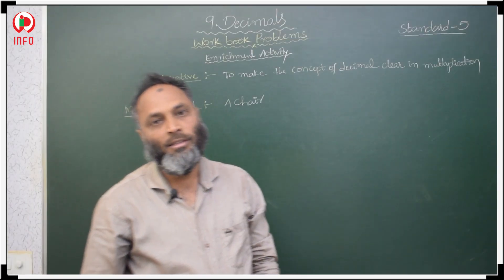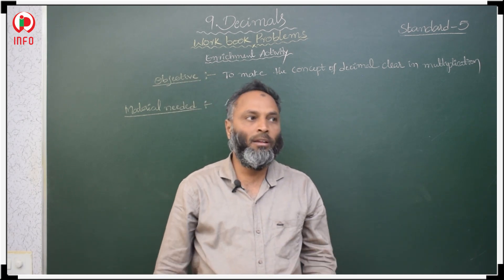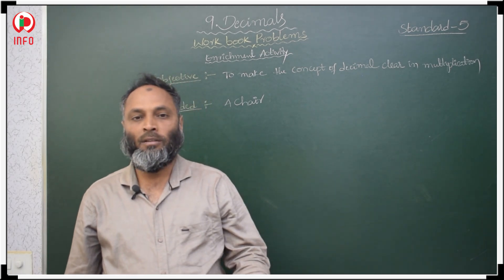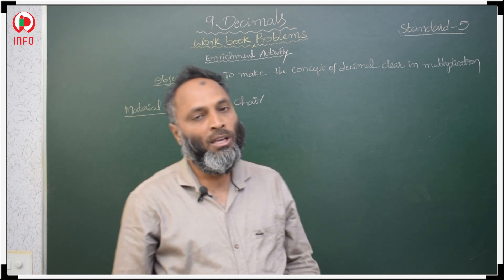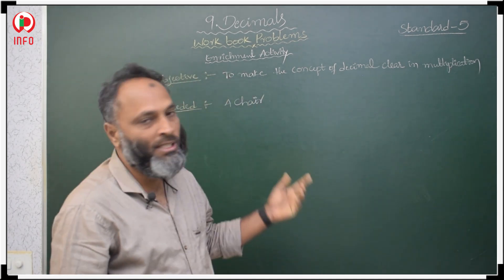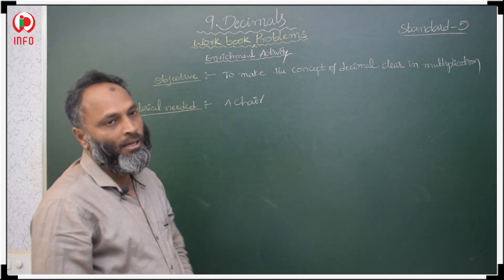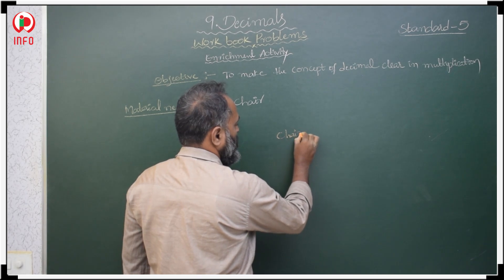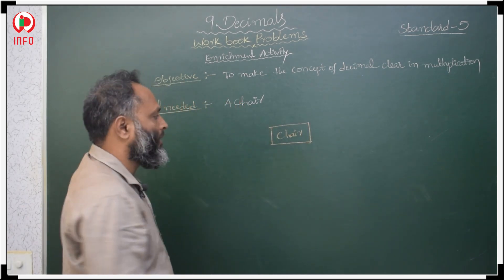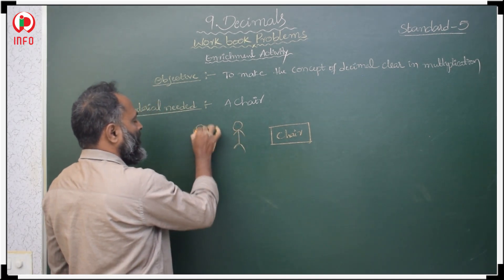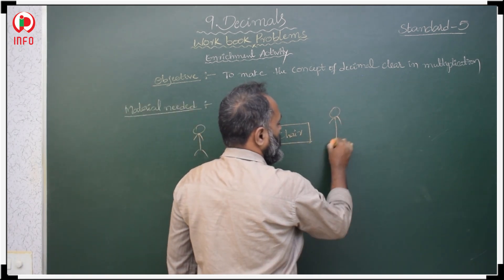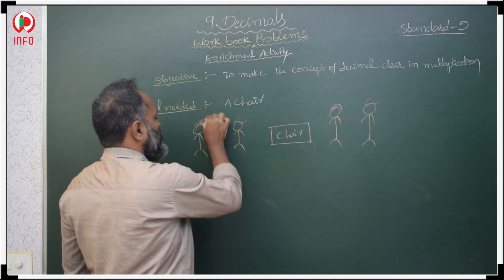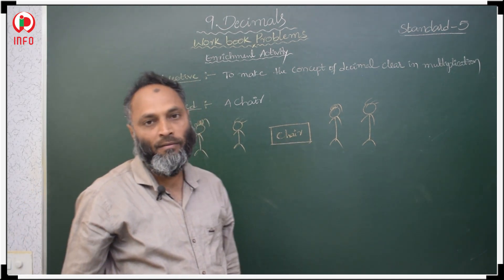Now the student enrichment activity. The main objective is to make the concept of decimal clear in multiplication — specifically how the decimal place moves when multiplying. We need one chair for this activity. Keep a chair in between in the classroom. Four students stand around it: two on each side. The chair represents the decimal point position.